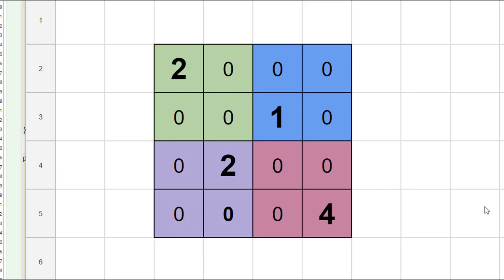We're going to have the computer fill in the smallest number possible that will not create any conflict on the board. So here, for example, we can start off by replacing this zero with the number one. Notice that the number one is not in any row or any column here, and it's not already in this green grouping. Next we're going to go over to the next zero and fill it.